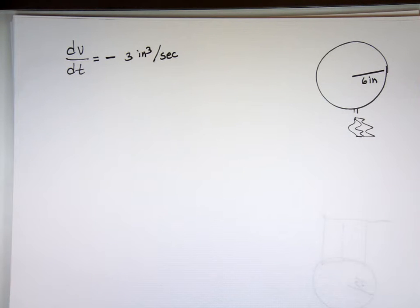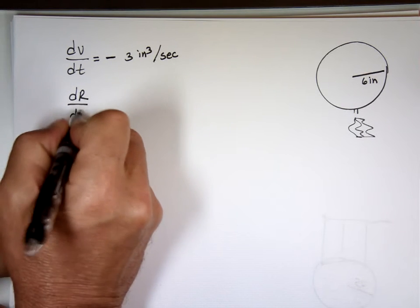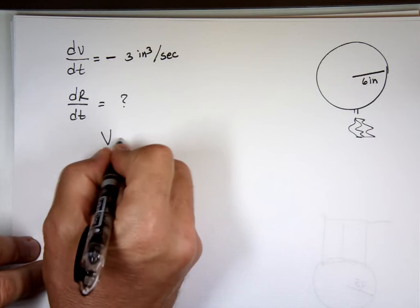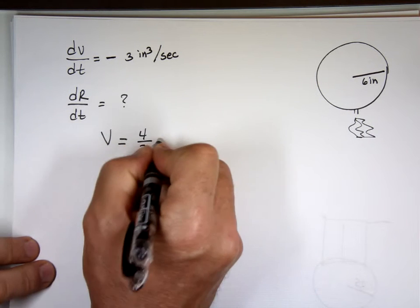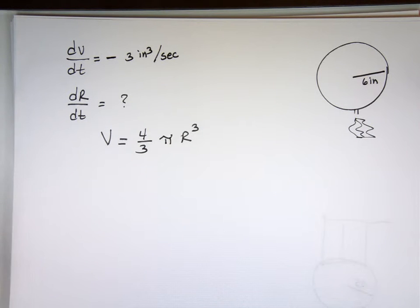That's how fast the air is coming out. And the question, what's going to happen to that balloon? It's going to shrink. So, what is the change in the radius? That's what I'm looking for. How fast that balloon is shrinking? Well, I need to find an equation that will tie a volume to the radius of a sphere. The balloon looks like a sphere. And we do have an equation, the volume of a sphere. It's four-thirds pi r cubed.